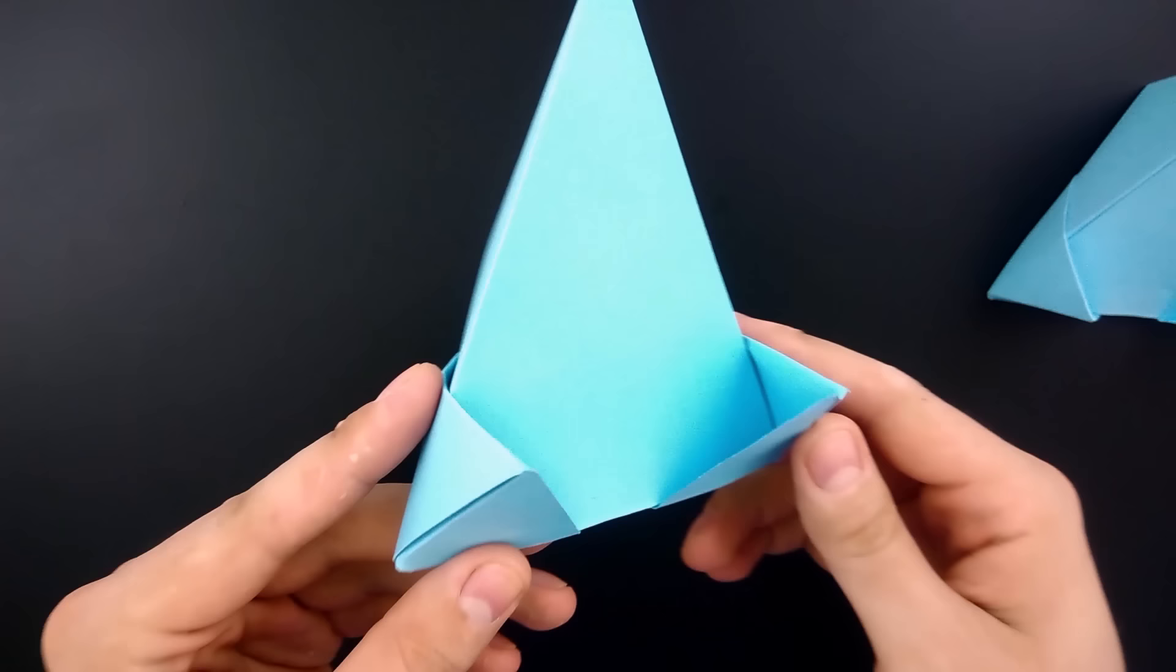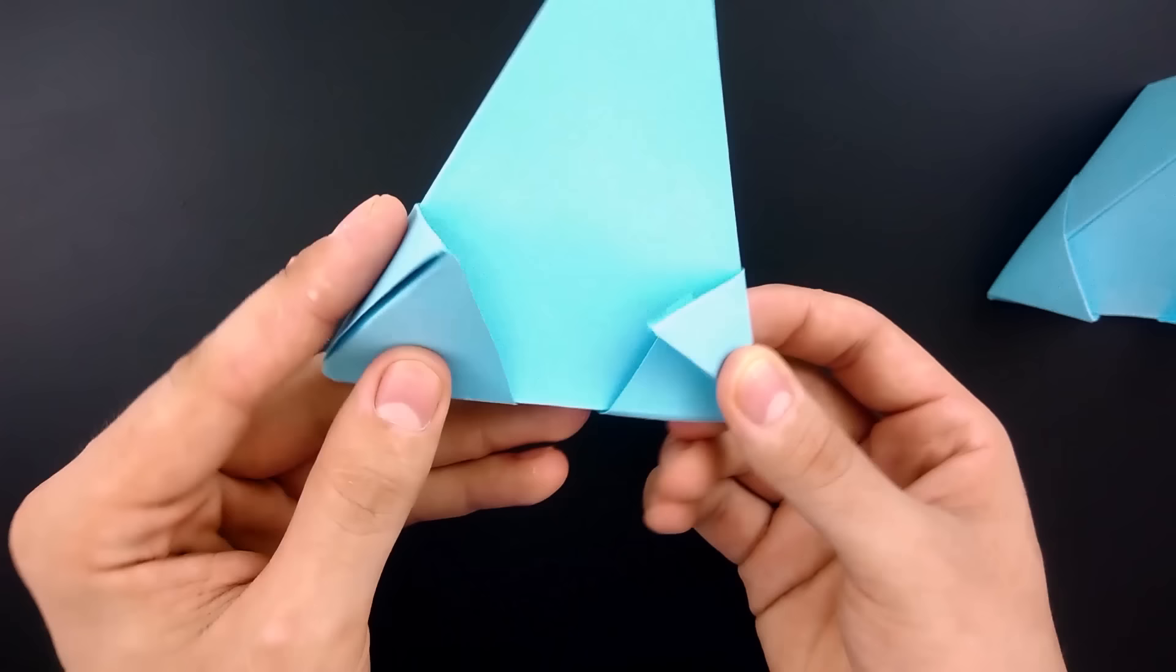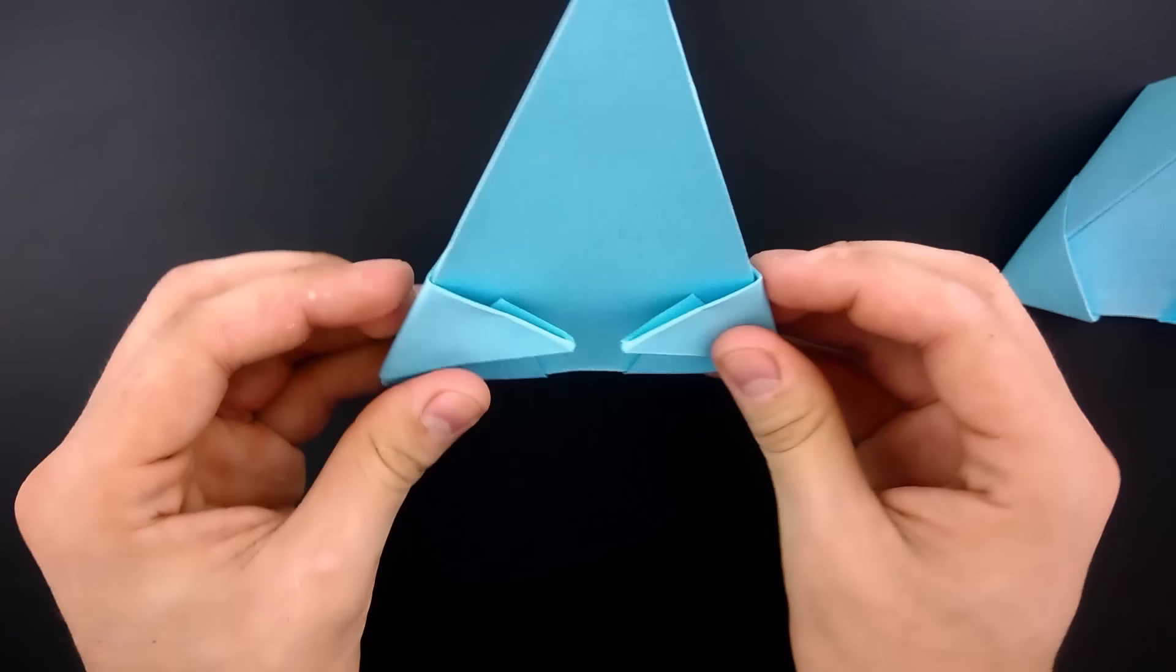But if you want it to be easier to store, you can still fold the corners of the front and then fold the front part in half, closing the paper like this.